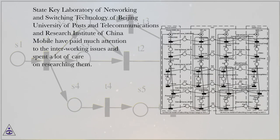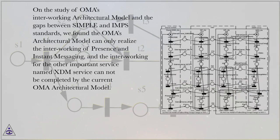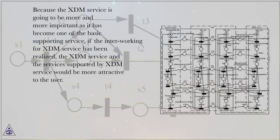At present, only OMA had made some contributions which just focused on a simple architectural model in the interworking subject — Open Mobile Alliance 2005-A, Open Mobile Alliance 2005-B. The State Key Laboratory of Networking and Switching Technology of Beijing University of Posts and Telecommunications and Research Institute of China Mobile have paid much attention to the interworking issues. On the study of OMA's interworking architectural model and the gaps between Simple and IMP-S standards, we found the OMA architectural model can only realize the interworking of presence and instant messaging, and the interworking for XDM service cannot be completed by the current OMA architectural model.